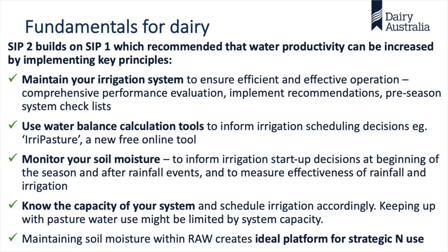Know the capacity of your system — know your system performance. And this one we won't be touching on much today, but it does create an ideal platform for strategic nitrogen use. As we heard yesterday, if you can't irrigate well, you're going to have a lot of trouble getting good nitrogen efficiency.